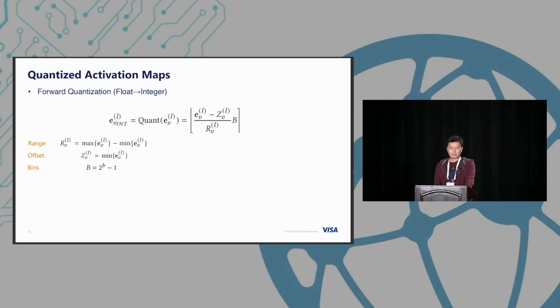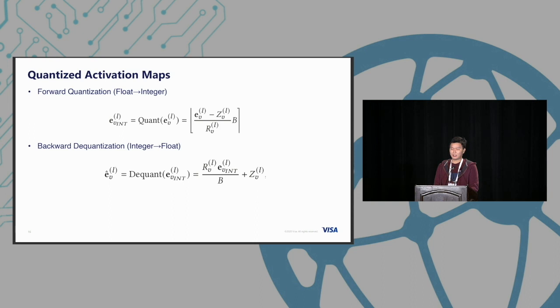In the forward pass we simply quantize our floating point to integers. We use stochastic rounding algorithms to convert floating point to integers. It's a very simple equation, very commonly used. In backpropagation we use a dequantization step, converting integers back to original floating point. In forward we quantize, in backpropagation we dequantize. This is our design. There's no very heavy operator in this quantization and dequantization step.